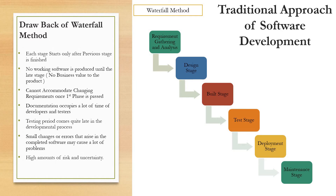During the requirement stage, detailed requirements are gathered from the client. Next is the design stage, which involves deciding which coding language and database to use. Next is the build stage, which involves coding the software. Next is the test stage, followed by the deployment stage — delivering the software to the client — and finally the maintenance stage, which involves support given after delivery.